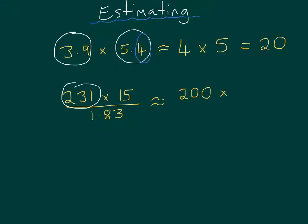I don't use 300, because 231 is closer to 200 than it is 300. And I'm going to times by, well, I could use 15, but again, I'm going to make it even easier for myself. I could use 10 or 20, but because of the 5, that means I'm going to round up to 20. And I'm going to divide by, now, nobody likes dividing by 1.83. I could pick 1.8, but again, that's going to be tricky, so I'm going to make it really easy for myself, and round to 2.